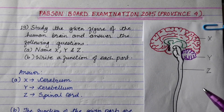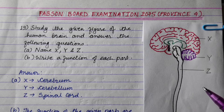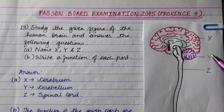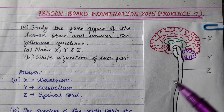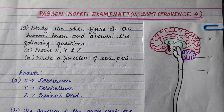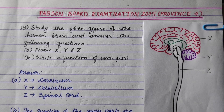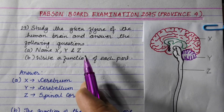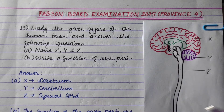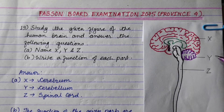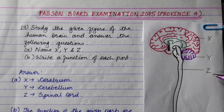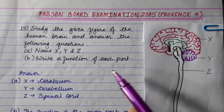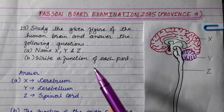You can see the figure of the human brain. We need to name X, Y, and Z, and write the function of each part.